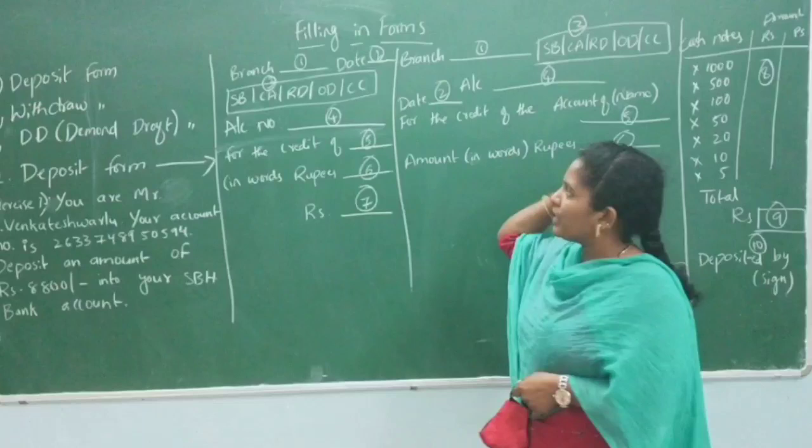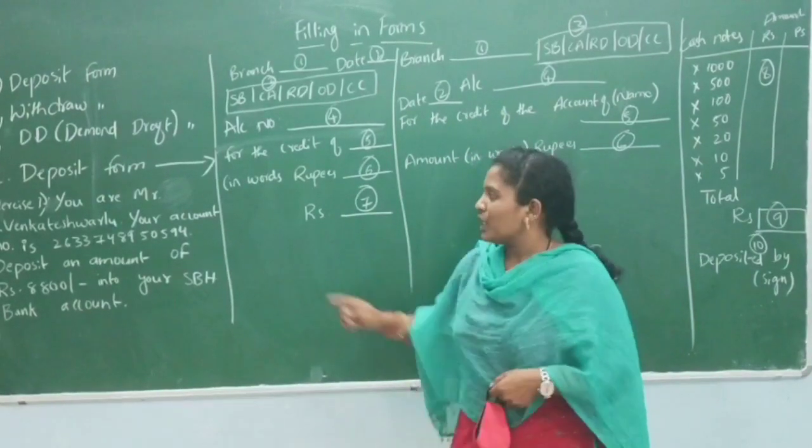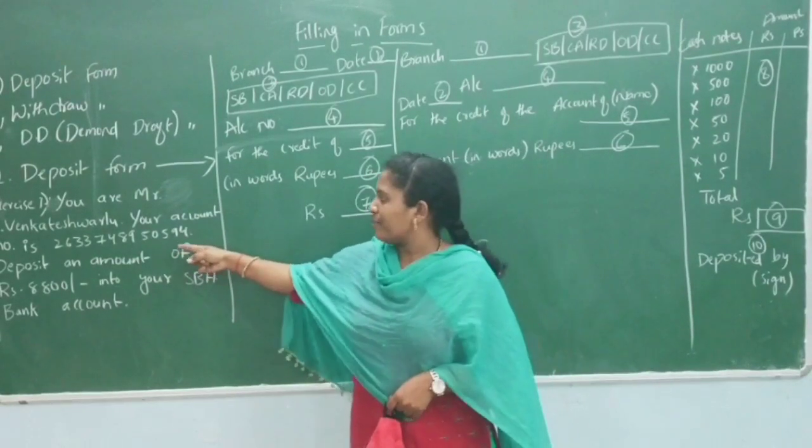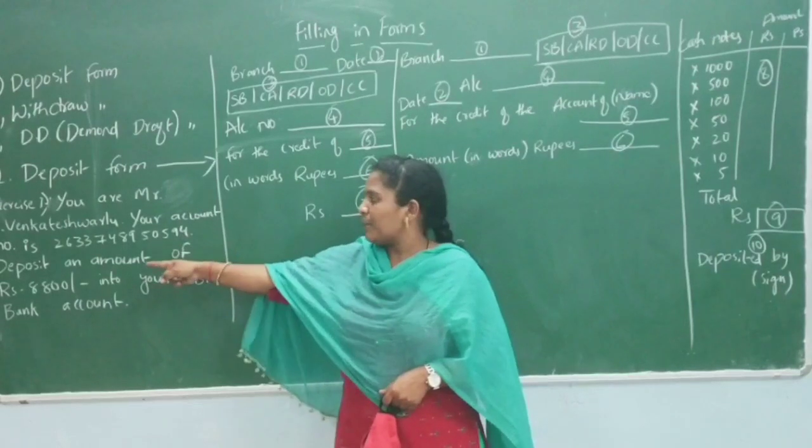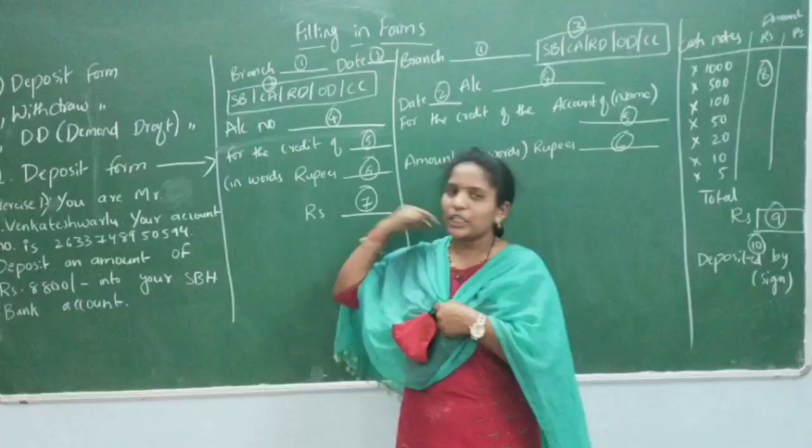So when you are depositing at the bank, your account number might be 2774895059494. The amount is 8,800 rupees.